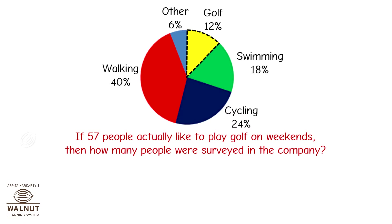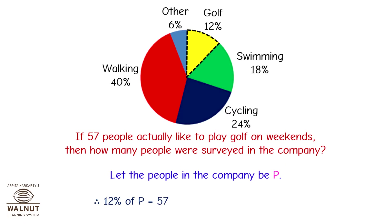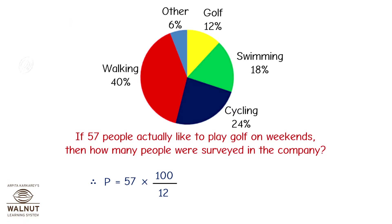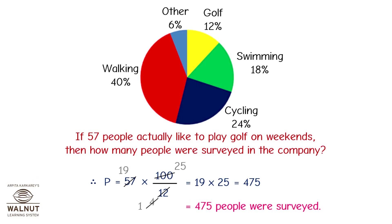If 57 people actually like to play golf on weekends, then how many people were surveyed in the company? You can see that 12% of people like to play golf. Let the people in the company be P. We can write it as 12 upon 100 into P is equal to 57. Transposing, we get P is equal to 57 into 100 upon 12. Simplify this and we get 19 into 25, which is equal to 475. Therefore, 475 people were surveyed in the company.